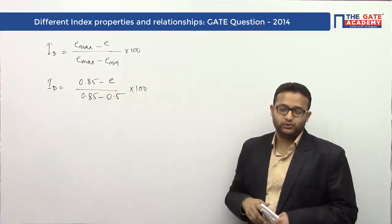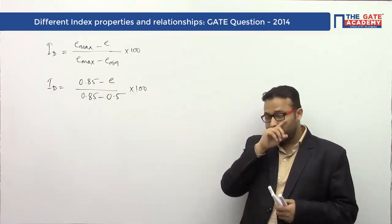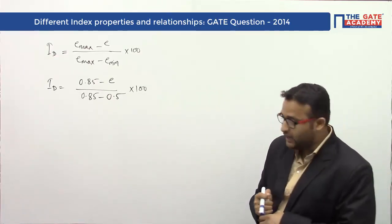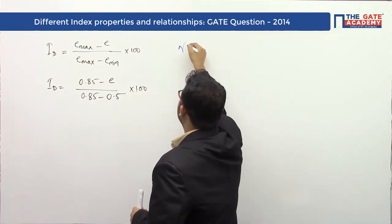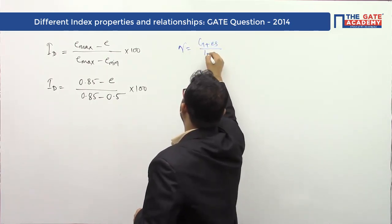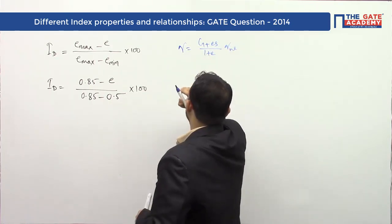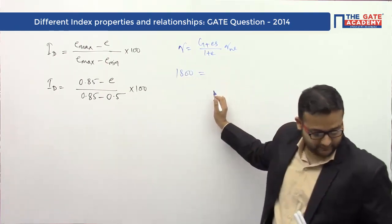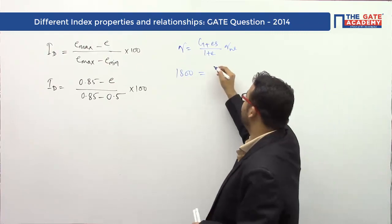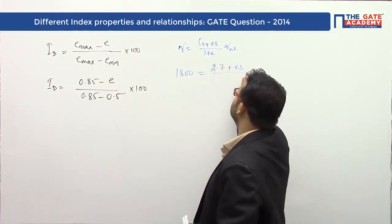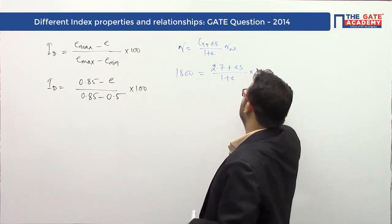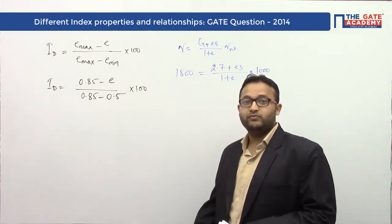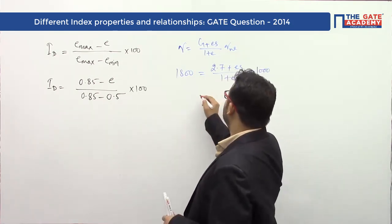The given data tells us mass density is given. I know γ = (G_s + eS) / (1 + e) × γ_w. So γ = 1800 kg/m³, specific gravity G_s = 2.7, so: 1800 = (2.7 + eS) / (1 + e) × 1000 kg/m³.